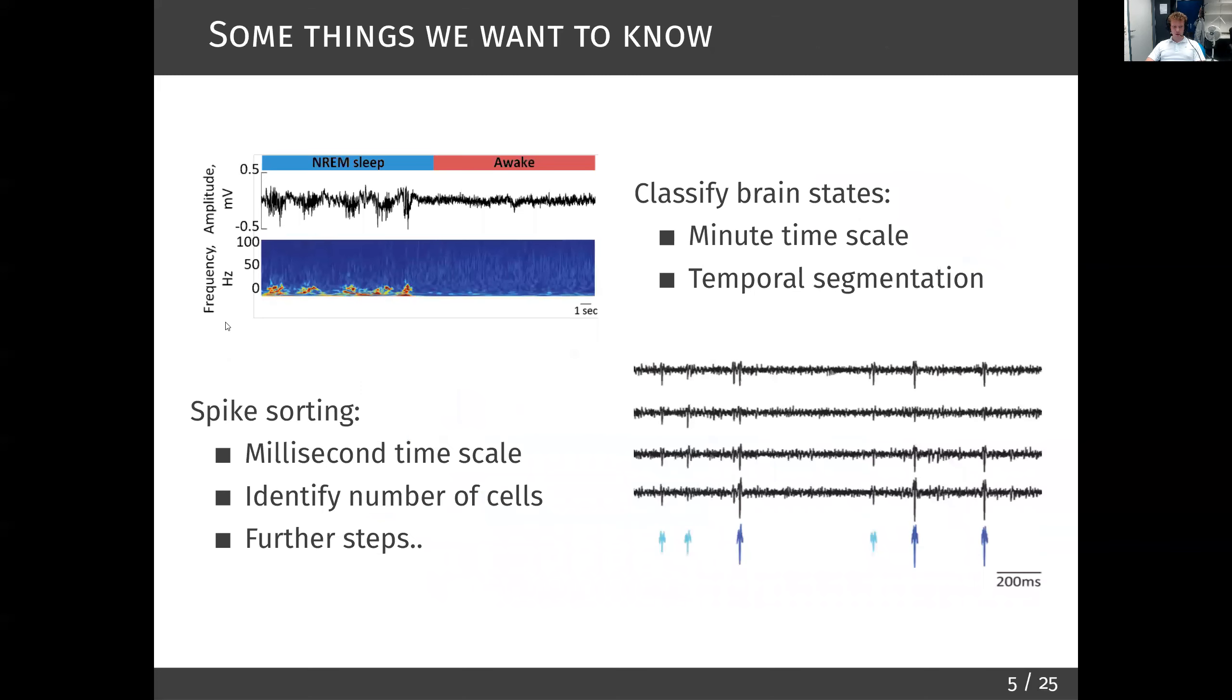Here are two major things we usually want to know when analyzing this time series. From the local field potential in some particular brain structures, we can find out brain states, such as stages of sleep, analyzing the time series at around a minute time scale. Concurrently with that, and remember that this could be in some cases even the same time series, we want to identify how many cells have contributed to multi-unit activity, usually at a millisecond time scale.